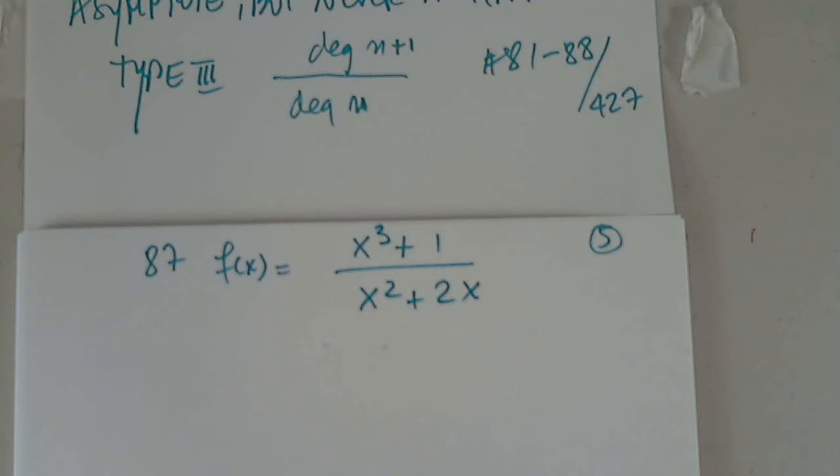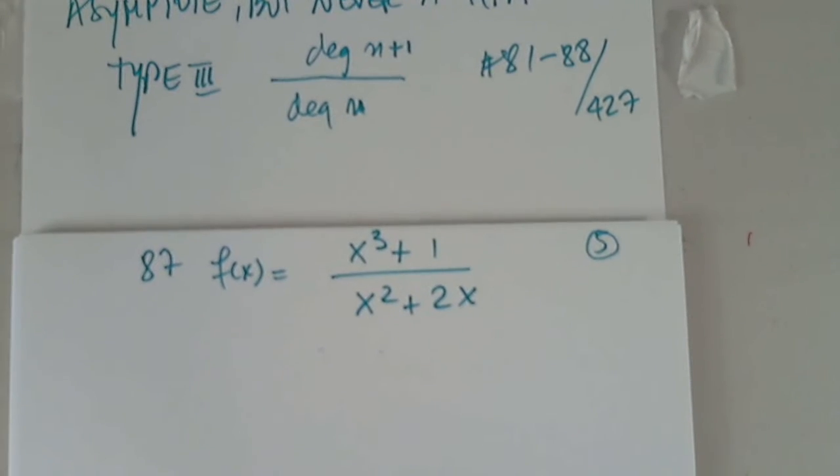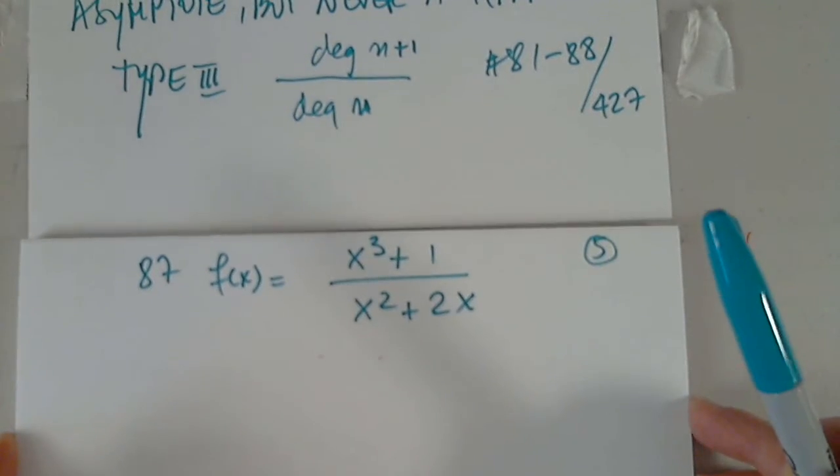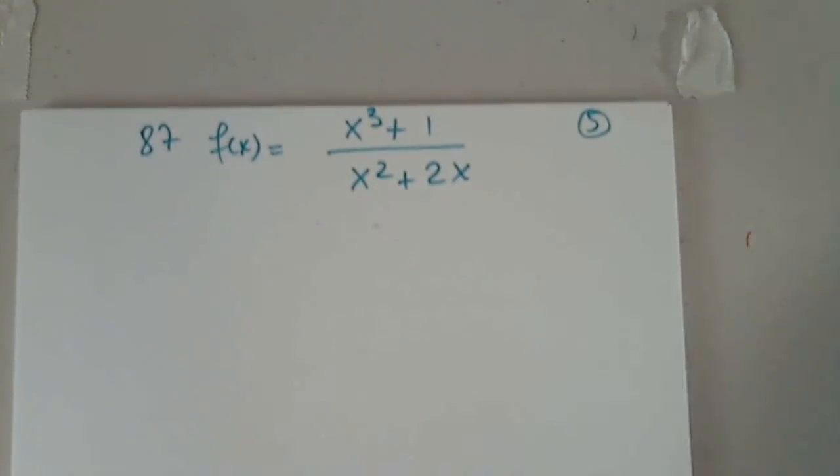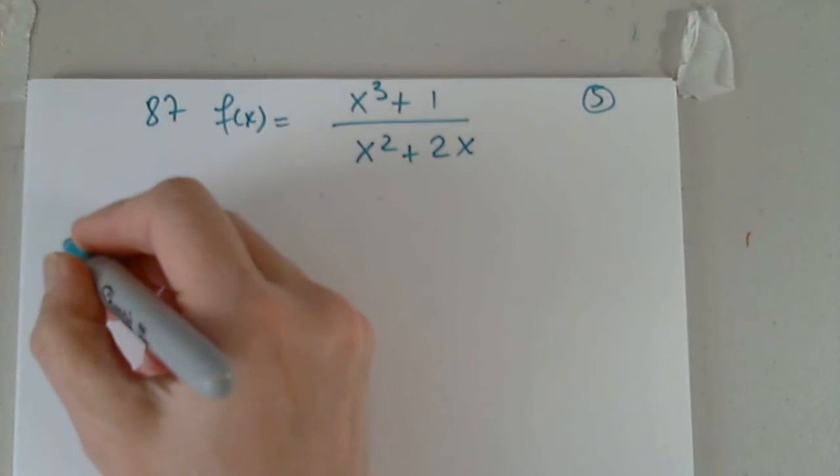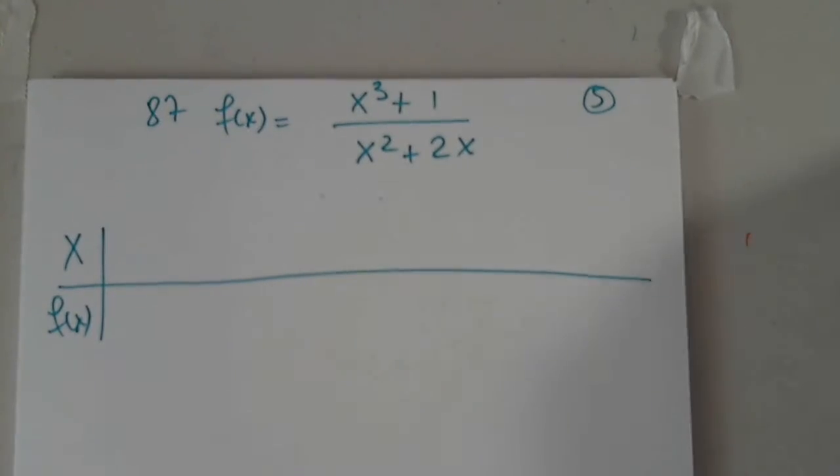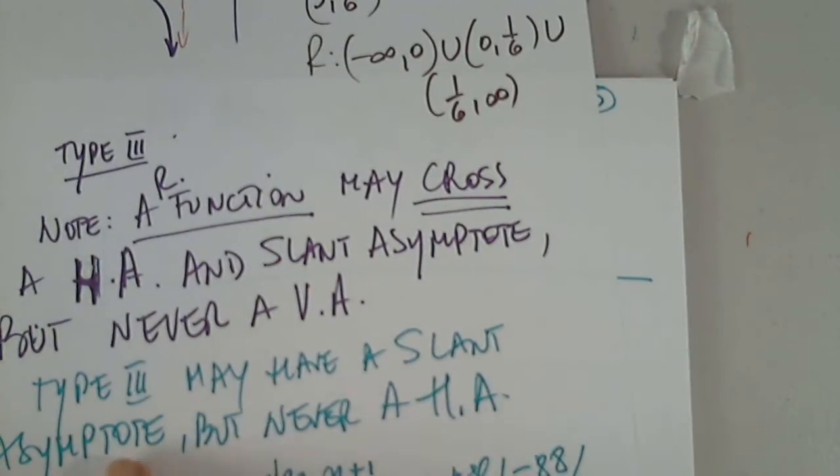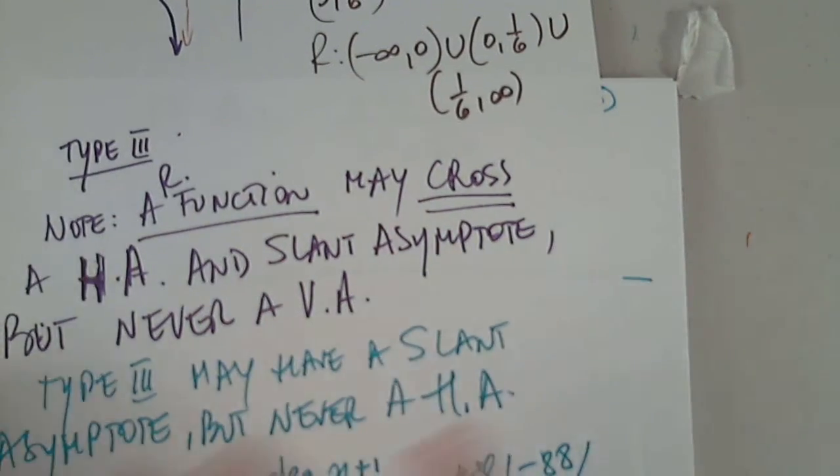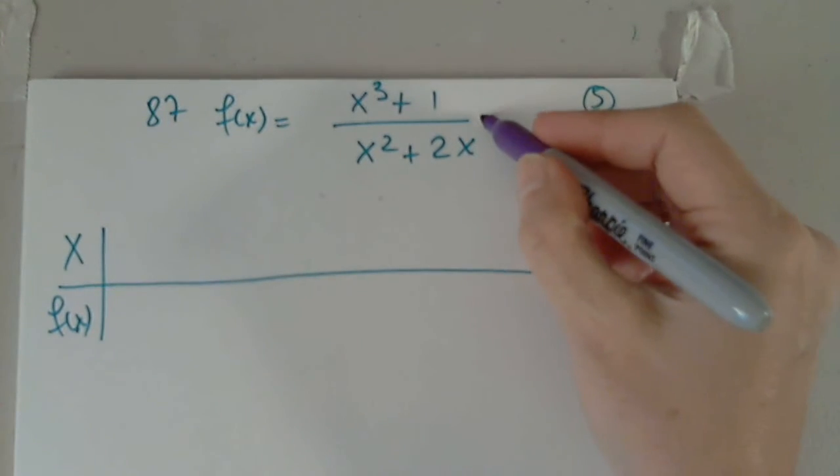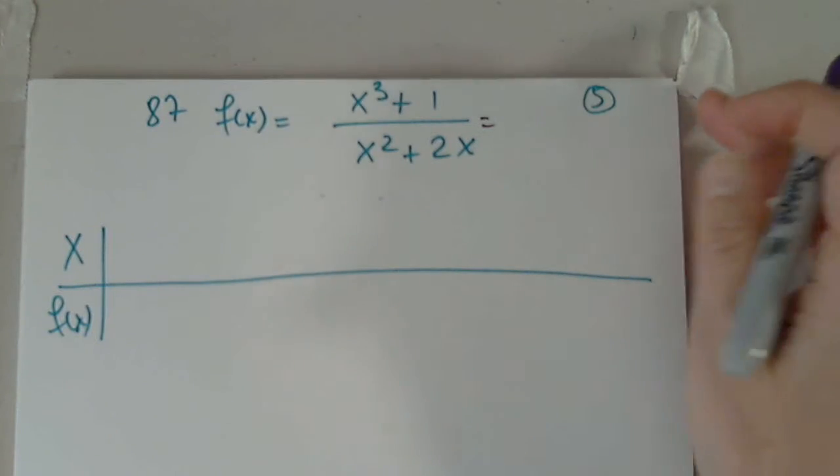F of x equals x to the third plus 1 over x squared plus 2x. It's definitely not type 1 because degree over degree is not the same degree. It's definitely not type 2 because type 2 has a higher degree in the denominator. So it's definitely type 3. So degree 3 at the top and degree 2 in the denominator. I get my table going. What will be the only difference? The only difference will be the slant asymptote. Everything else is the same. X and y intercepts, vertical asymptotes, everything the same.